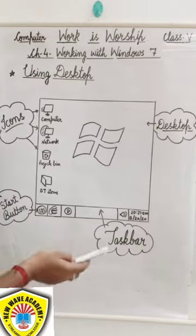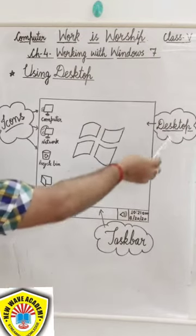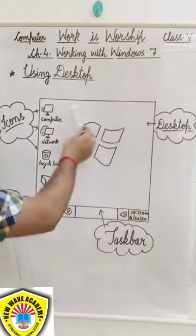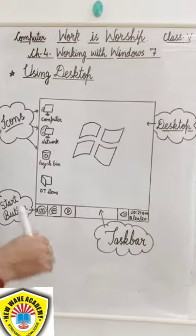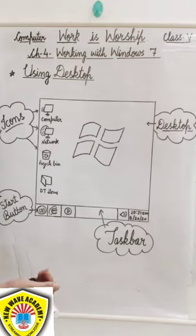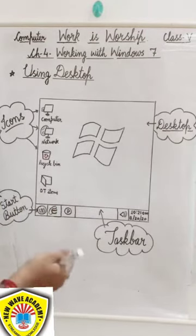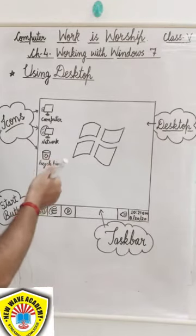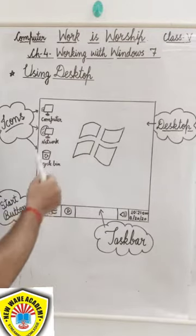The desktop of Windows also serves the same purpose. On the computer desktop, we can find various icons and objects, such as shortcut icons, document icons, and disk drives — all these things can be found on the computer desktop.